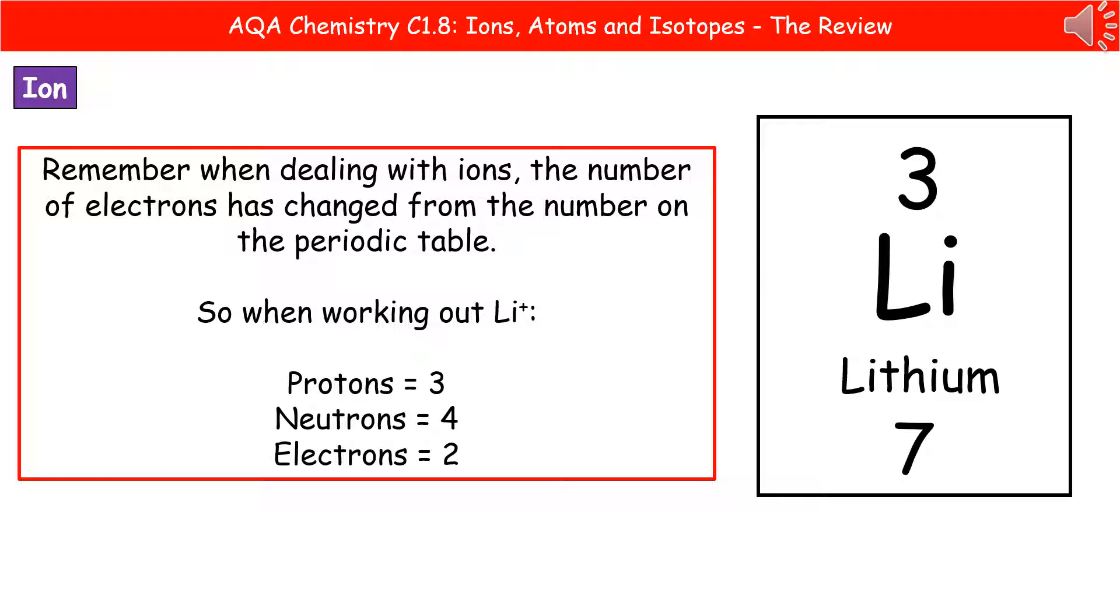But we have an ion, so it's got a single positive charge. This tells us there's one more proton than electrons. So that means if we've got three protons, we will only have two electrons. So just remember that with the ions, that the electrons will change.